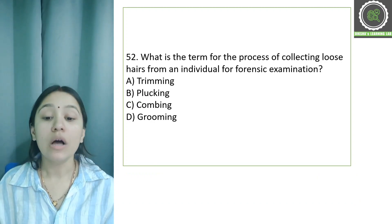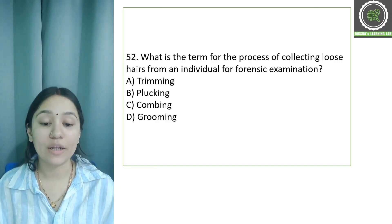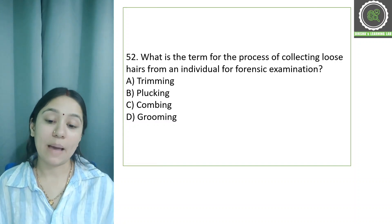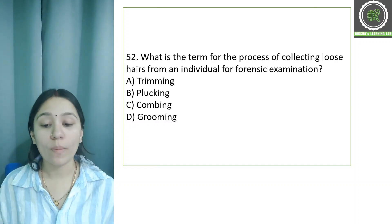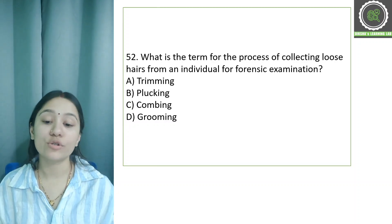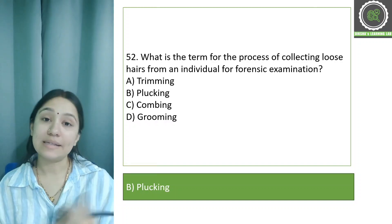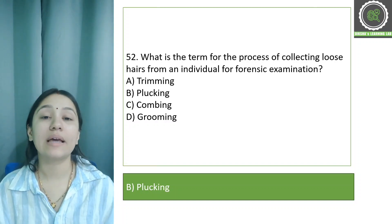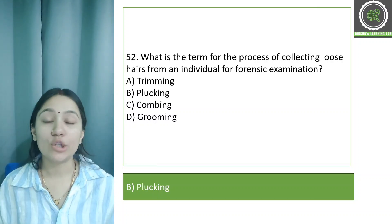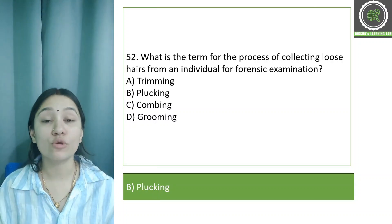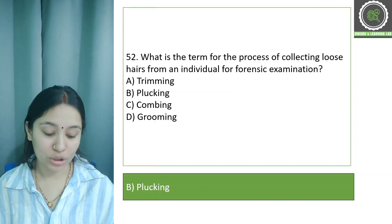Question number 52: What is the term for the process of collecting loose hair from an individual for forensic examination? Options: A) trimming, B) plucking, C) combing, D) grooming. The correct answer is option B, plucking. Hair samples are collected by plucking so that important DNA samples at the root are obtained. Young hair contains a good amount of DNA because it hasn't reached the shedding stage yet.